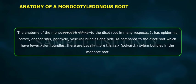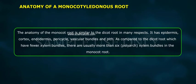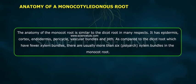The anatomy of the monocot root is similar to the dicot root in many respects. It has epidermis, cortex, endodermis, pericycle, vascular bundles, and pith. However, compared to the dicot root which has fewer xylem bundles, there are usually more than six polyarch xylem bundles in the monocot root.